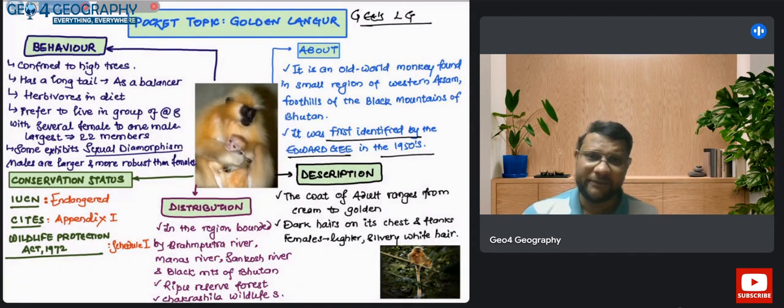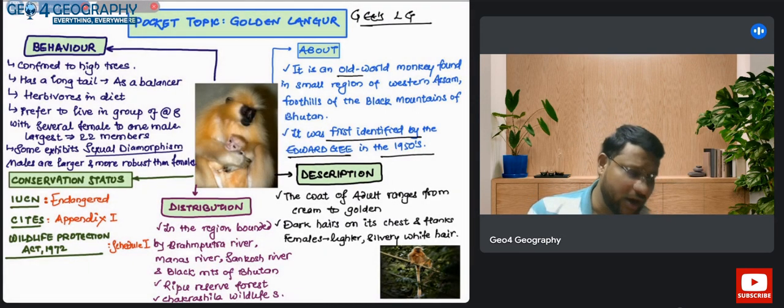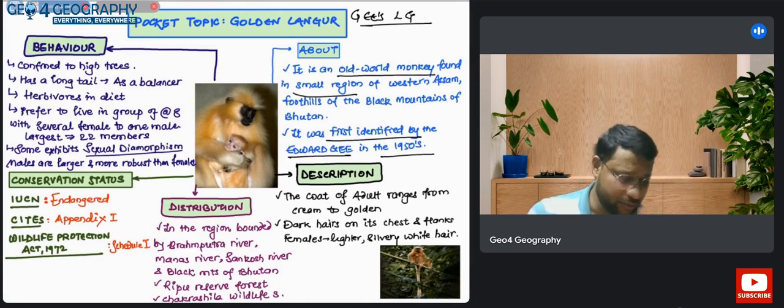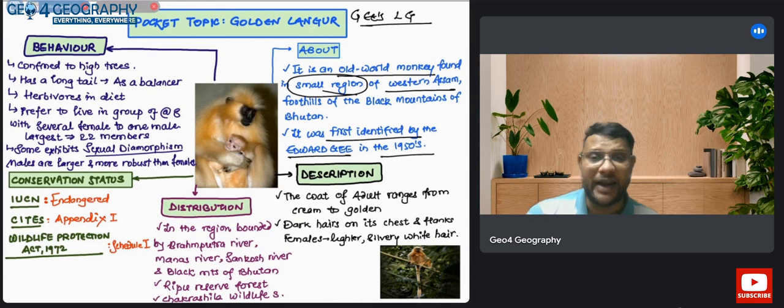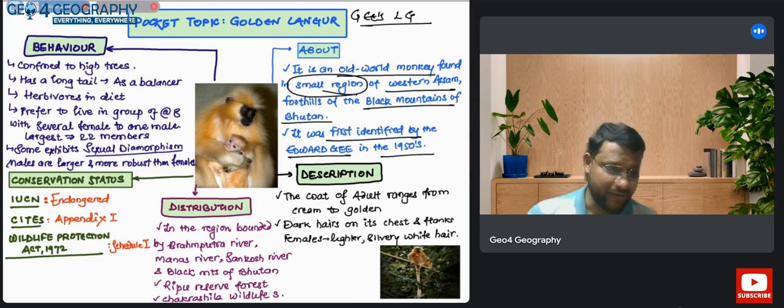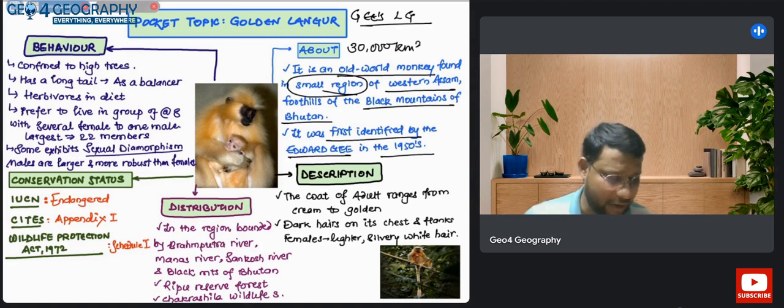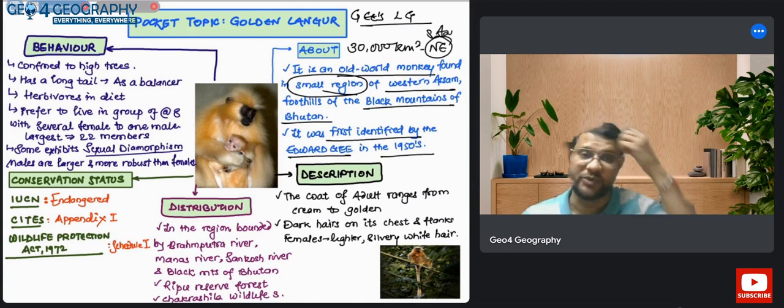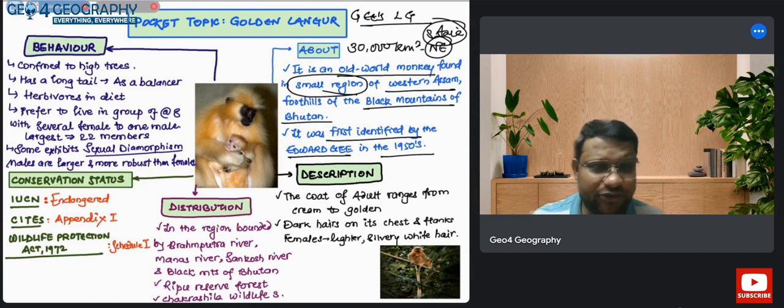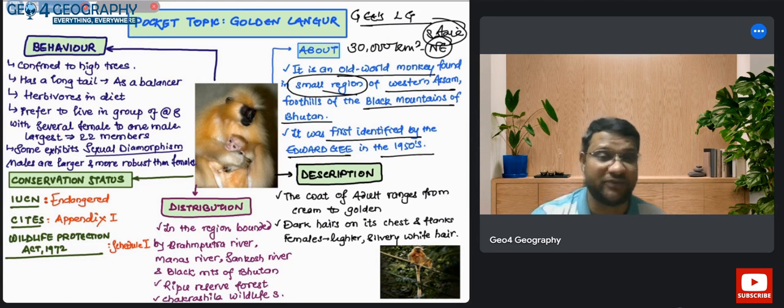It is an old world monkey found in a small region of western Assam and the Black Mountains of Bhutan. The more appropriate location in the world is a 30,000 square kilometer area of northeastern India or South Asia. This region has presence of this Golden Langur species, a very unique species because it is very endemic to this region with very limited range.